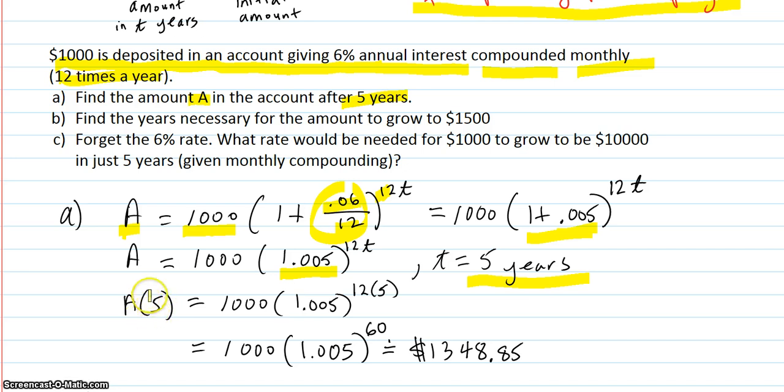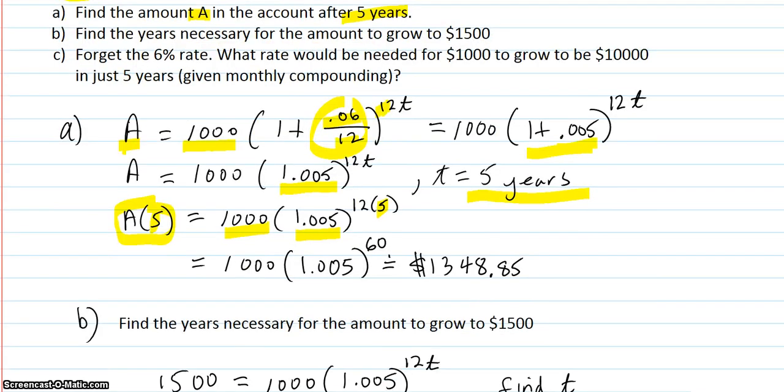And I think they wanted it for five years. So I wrote this as a function notation. A of 5 is 1,000, 1.005 to the 12 times 5. This is not being multiplied. This is a function notation. So that's 1,000, 1.005 to the 60. And you punch that into the calculator and you get this amount of money. So it grew by about $348.85.